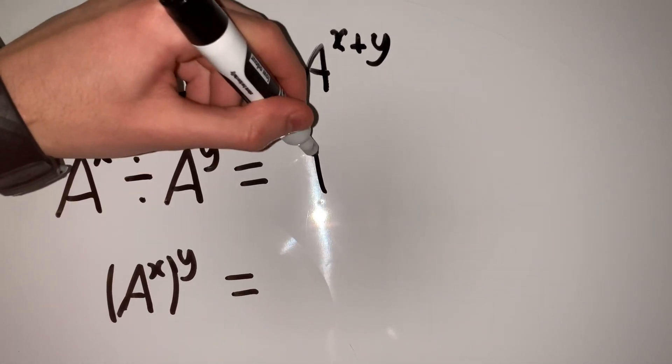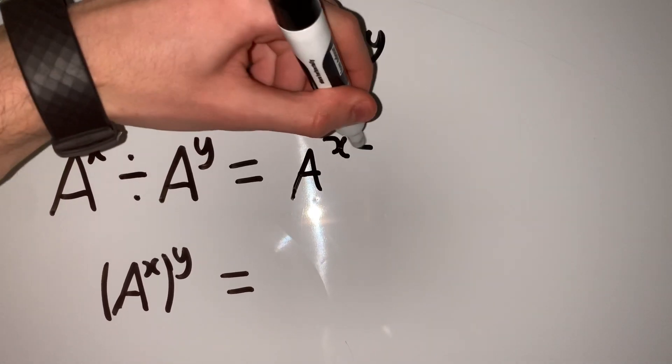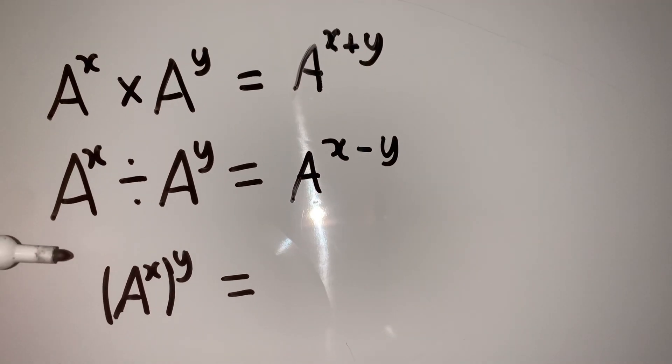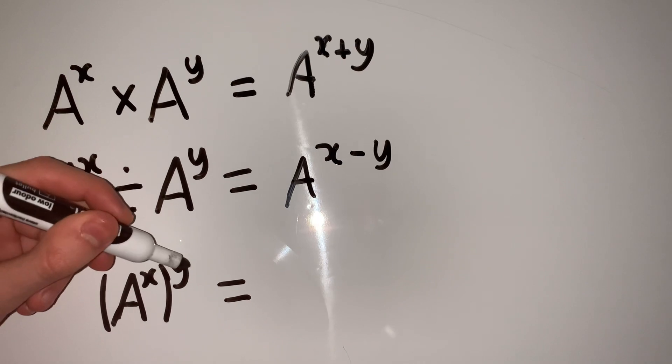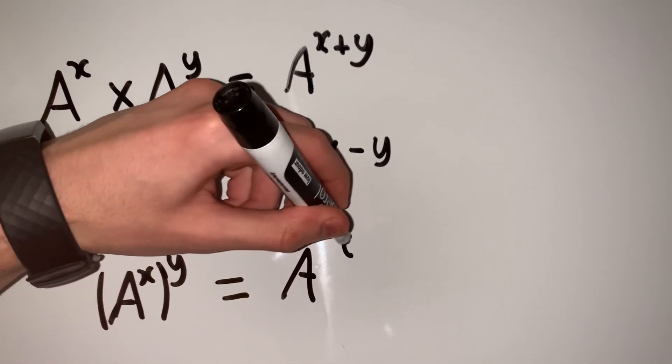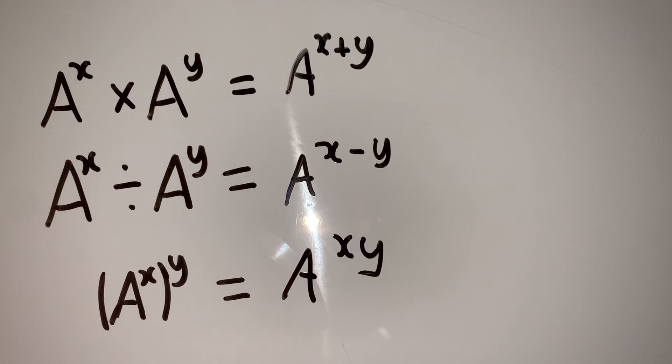Now if you divide, you subtract the powers. And if you have a number to a power and the whole thing is being raised to another power, then the result is those two powers multiplied by each other.